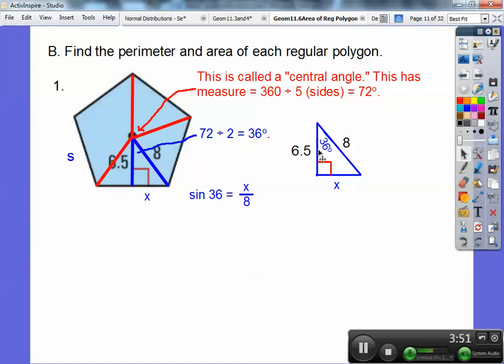But here I'm going to go ahead and find x using the sine ratio. I also could have used the tangent ratio. Sine is opposite over hypotenuse. So that's where I have x over 8. So the sine of 36 is 0.588. And so I cross multiply and I get 8 times 0.588 equals x.